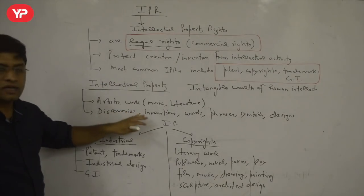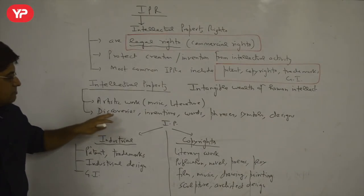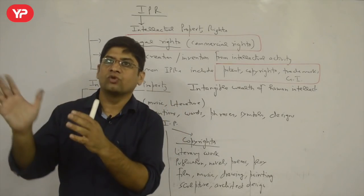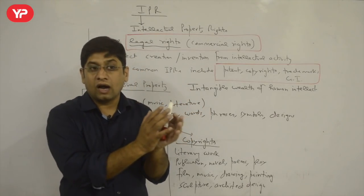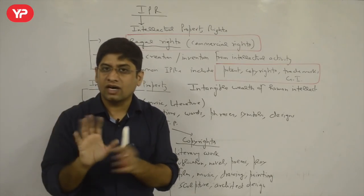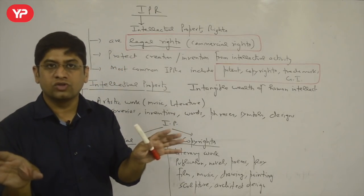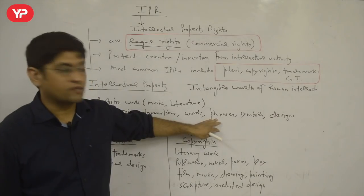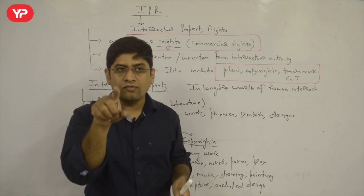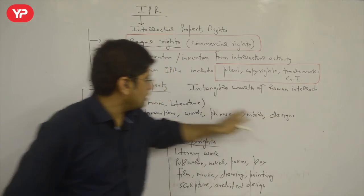Artistic work, music, literature, whatever I have written, composed, or sung — all of that comes under intellectual property. Movies are also included. For example, whatever Swami Vivekananda said — I cannot put my name on it. So if someone coined a phrase and said something very good, they can get it patented or copyrighted. Phrases, symbols, and designs are also included — the Mercedes-Benz symbol, for instance, cannot be used by just anyone because they have trademarked it. So all of this is intellectual property.